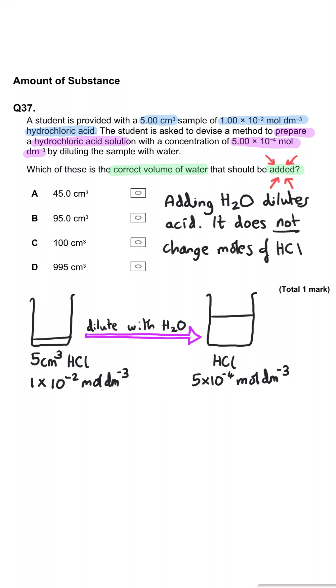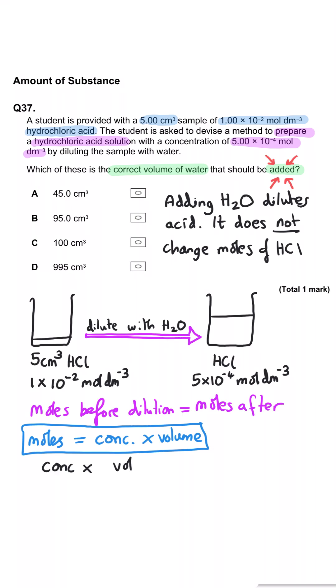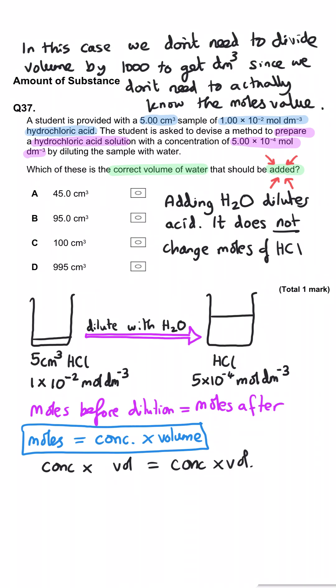Well, what's important to note here is that by adding water, all we're doing is diluting the acid. And so what I mean by that is the moles of acid that we have before we dilute it will be the same as the moles we've got after the dilution has occurred.